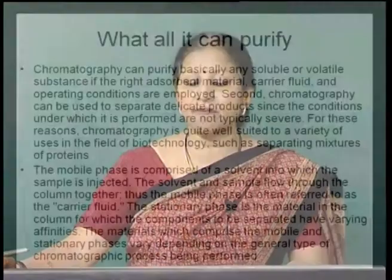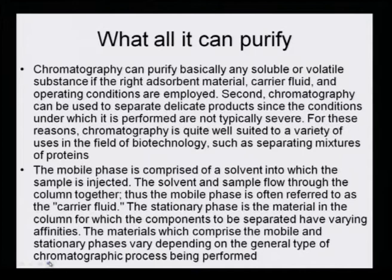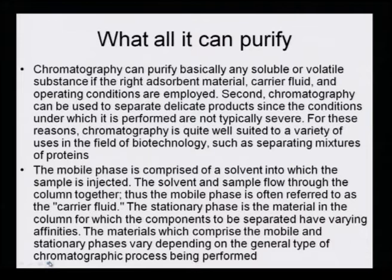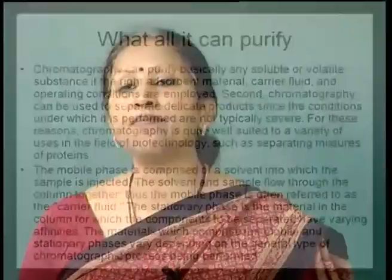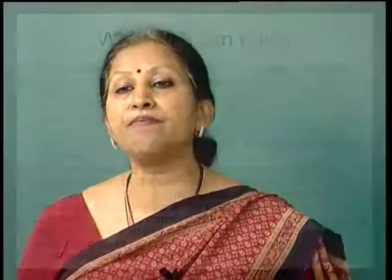The mobile phase is comprised of a solvent into which the sample is injected, and the solvent and the sample flow through the column together. Thus, the mobile phase is often referred to as the carrier fluid. The stationary phase is the material in the column for which the components to be separated have varying affinities. The materials comprising the mobile and stationary phases vary depending on the general type of chromatographic process being performed. In summary, chromatographic separations involve two phases – mobile and stationary – and the analyte has different rates of movement, and adsorption/desorption helps it to get separated on the column.